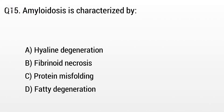Question 15. Primary amyloidosis is characterized by: The right answer is Option C: Protein misfolding.